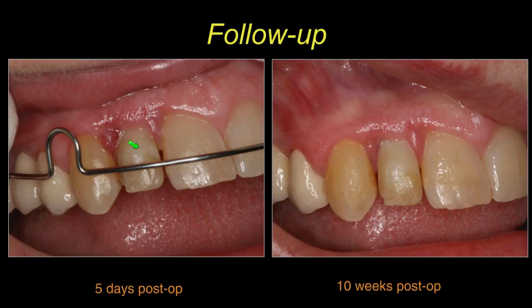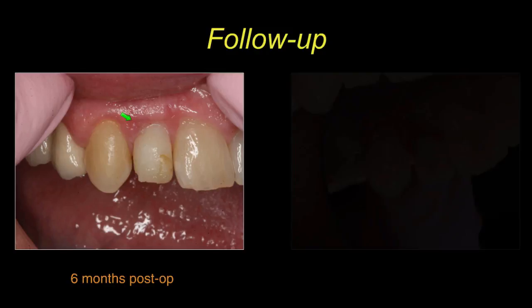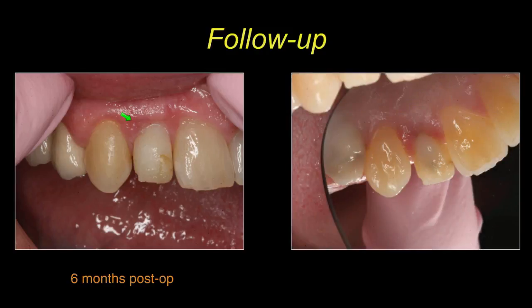Once the provisional was placed, even with some trauma from the flap reflection, if it's properly polished you'll find the tissue heals really well. You'll start seeing tissue that's looking nice and pink. You can only create that if you have a well-fitted, well-polished provisional. Over a longer period of time, even on the palatal side, it looks really nice.